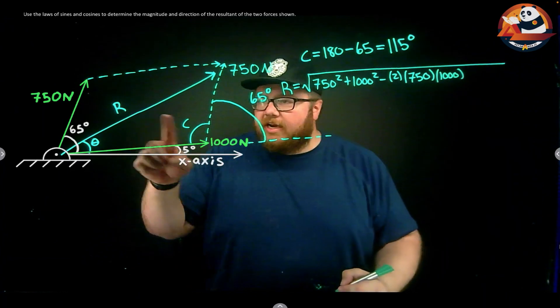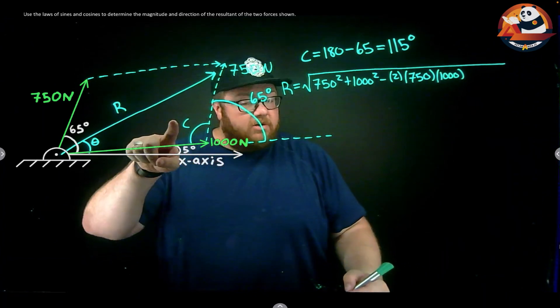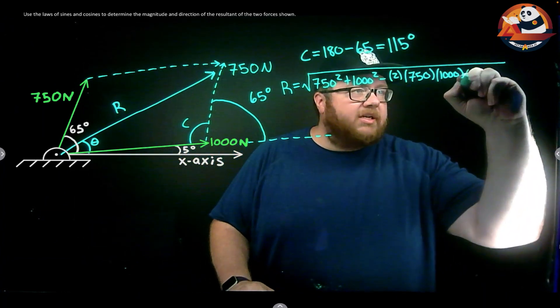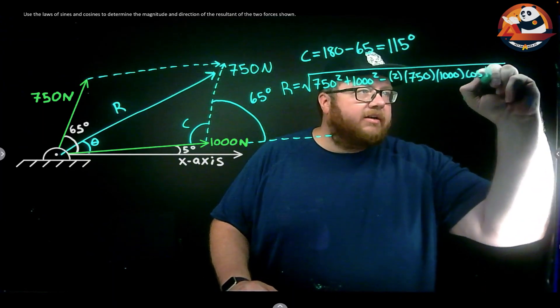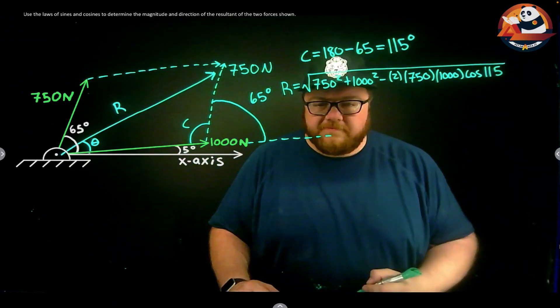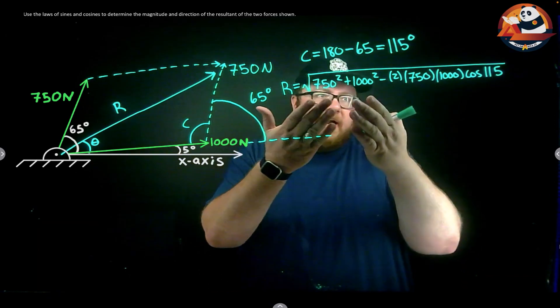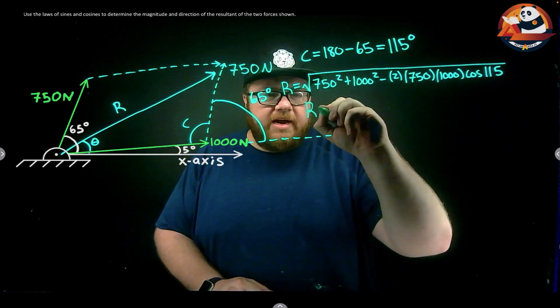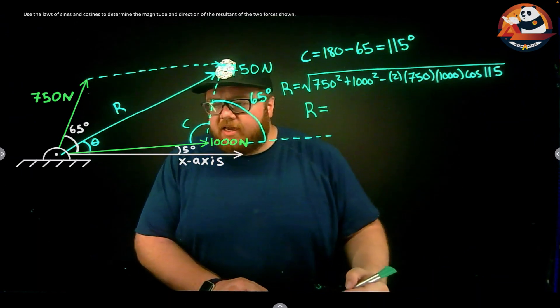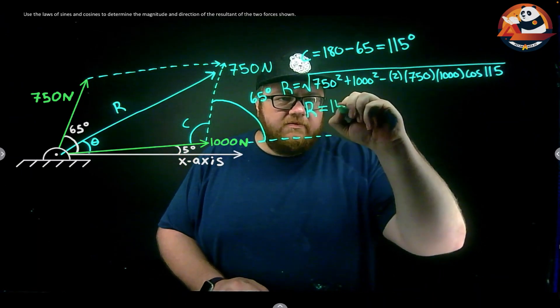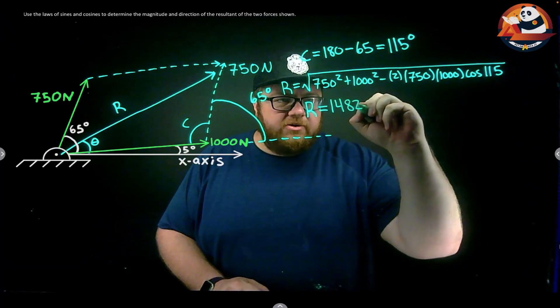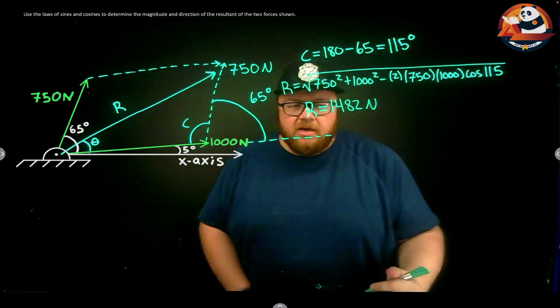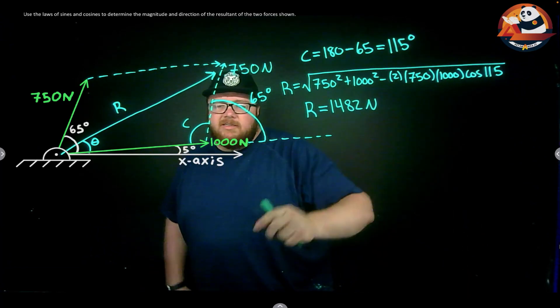Times the cosine of the angle between those two sides, which is side C, so cosine of side C is 115. Doing the math, just punching that into our calculator, I'm going to get the magnitude of our resultant is 1482 newtons. So we have our magnitude of our resultant.